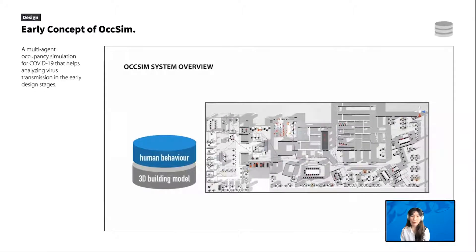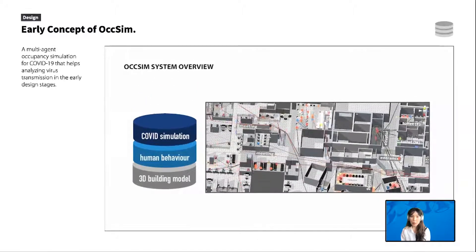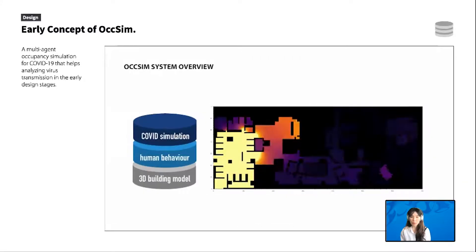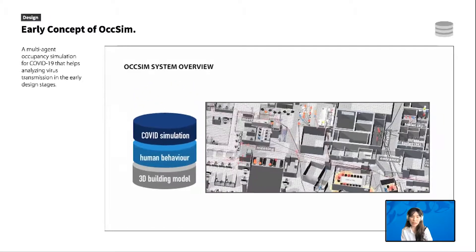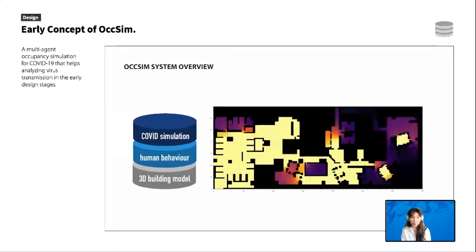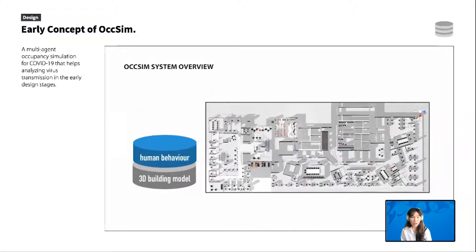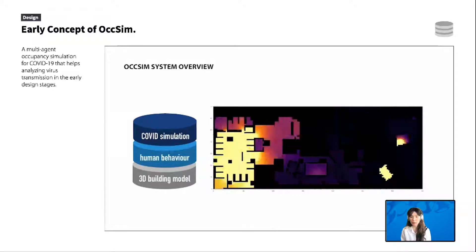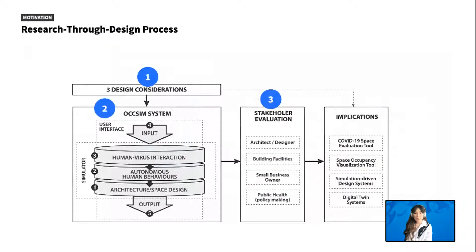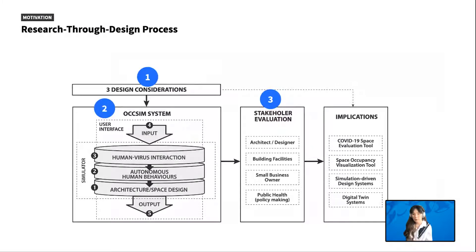Our research goal was to investigate how we can design a system that helps people evaluate the potential risk of virus transmission while designing the built environment or planning building facilities. When we started this project, we had a brief idea of how we wanted to design a system. We aimed to simulate occupants in relation to a given building model and then apply a virus transmission model on it. Occupancy simulation has been actively investigated in the field of building simulation. However, we argue that how to apply this technology in an interactive tool to support people's facility planning process has not been fully explored in the HCI community. To answer this question, we took a research-through-design approach. We began by generalizing key design considerations for designing occupancy simulation, then designed a system and evaluated our work with potential users and discussed the future implications.